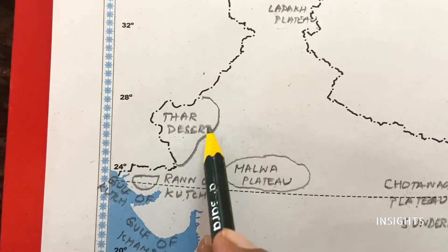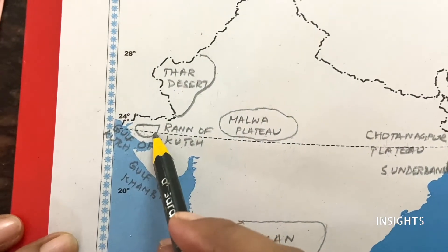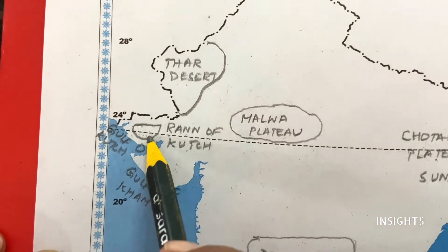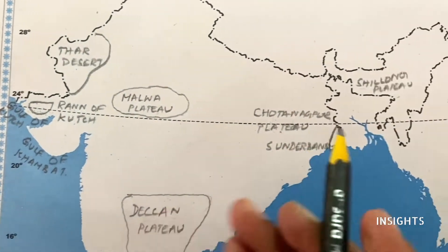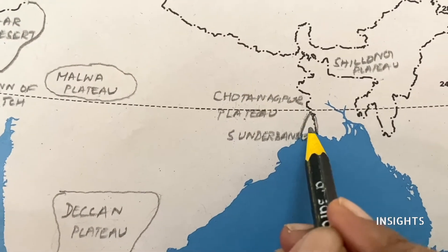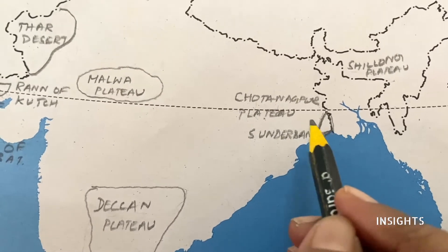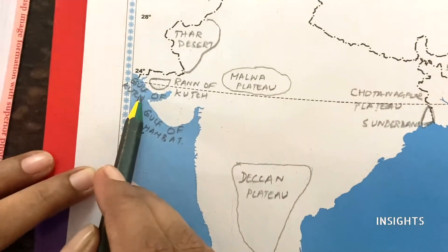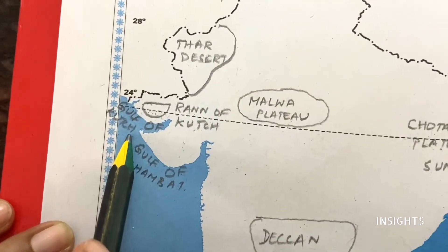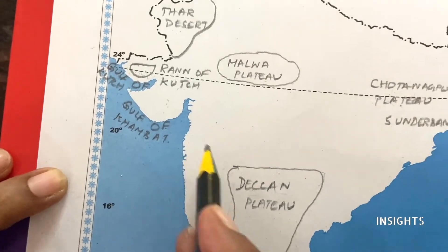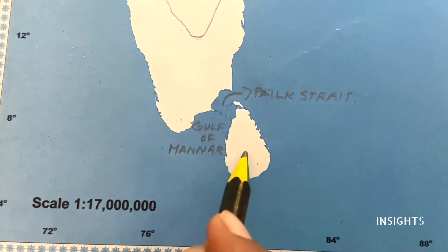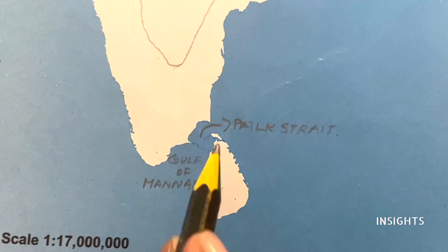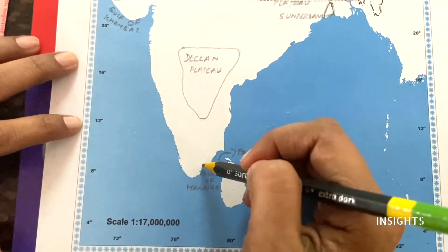There is just one desert in our country and that is the Thar Desert on the Rajasthan side. Another important place is the Rann of Kutch. The Gulf of Kutch is the smaller one and Gulf of Kambat is the bigger one. Just opposite to this, on the east side, is Sundarbans - the Ganges river flows there, it is a marshy wetland. Then coming down to the south, separating India and Sri Lanka, you have Palk Strait on top and the Gulf of Mannar below. Finally, this side is called the Western Coast and this side is called the Eastern Coast.